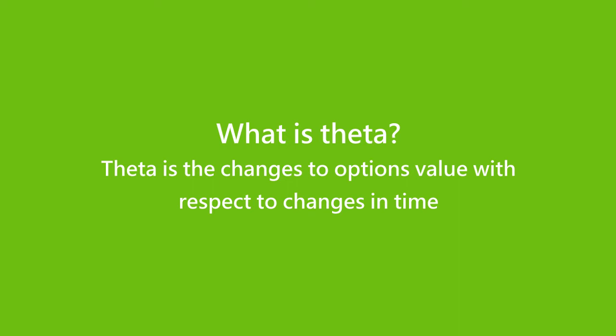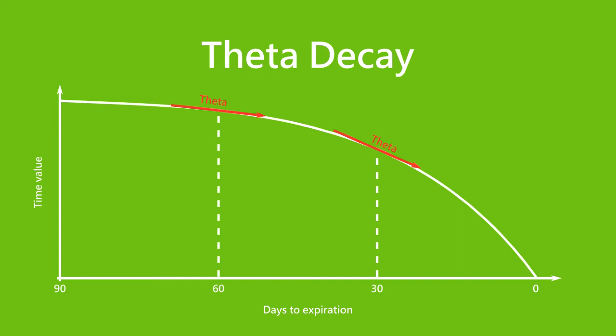Theta is the change to options value with respect to changes in time. Theta is negative because every passing day causes the option value to decay a little. The gradient of the time value chart represents theta. Theta decay is slower around 90 days to expiration, then the decay speed increases as time passes, becoming quite large at less than 30 days to expiration. This is why we usually sell options that expire around 30 days out, so the theta decay is fast enough to close the trade for a profit.